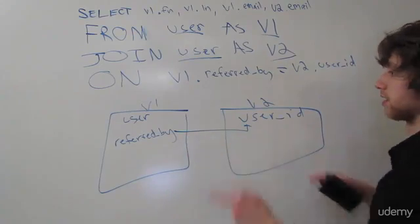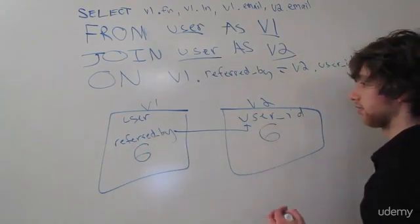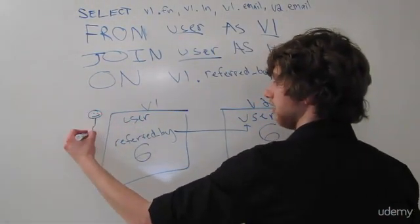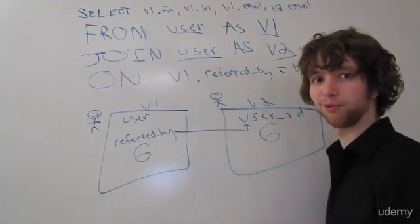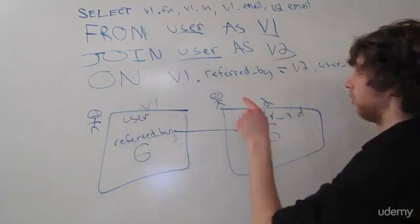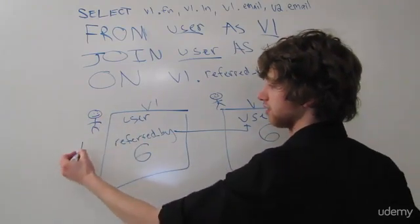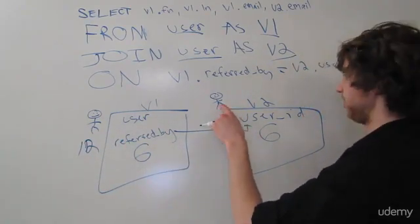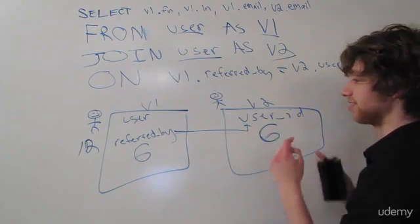So that means we need to make this connection and say that if there is a 6 in the referred by column, it needs to be the same as the user ID over in the V2 table that has 6. For example, imagine we have one person — his name is Samuel — and another person whose name is I'll, and I'll referred Samuel. That means I'll is going to have user ID 6, and Samuel has the ID of 12, and he was referred by the person with user ID 6, which is I'll. The other table, which is also the same user table, is going to refer to the person with the ID of 6.